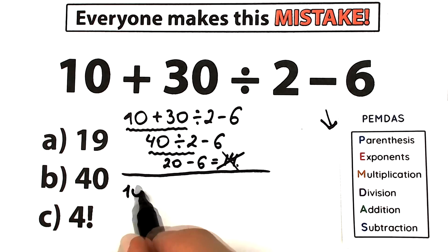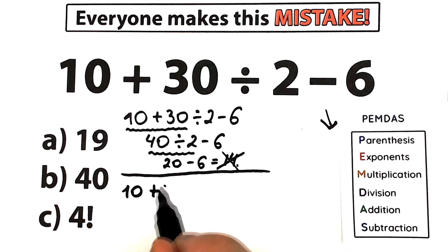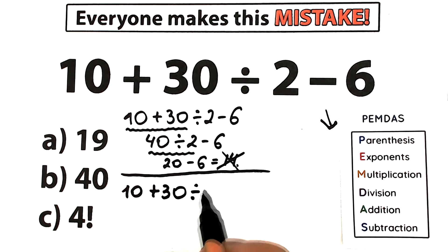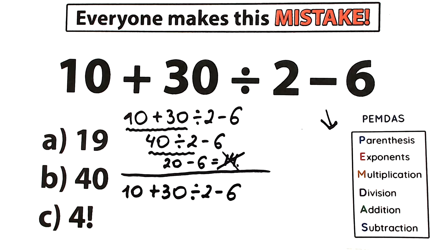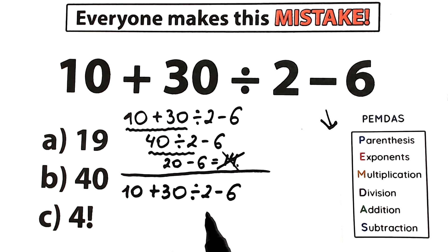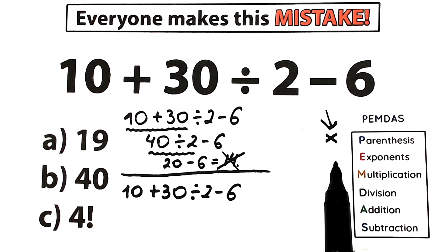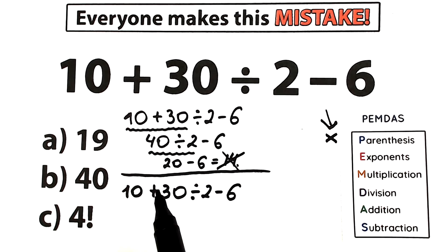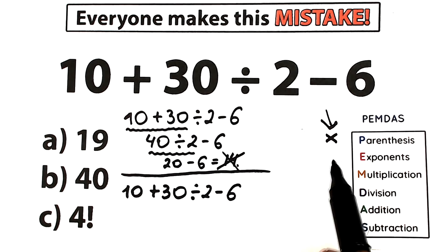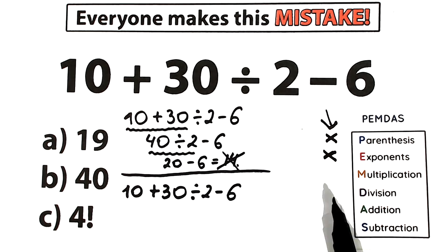We have 10 plus 30 divided by 2 minus 6. What is the first step according to PEMDAS? First step: parentheses. Let's look — do we have any parentheses? I don't see any, so we skip this part. What about exponents? Do we have squares or cubes? We don't have any powers, so we skip this part as well. We don't have parentheses and we don't have exponents, so let's go to the next step.